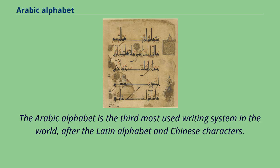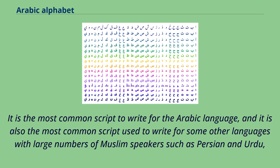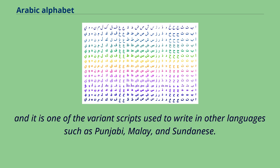The Arabic alphabet is the third most used writing system in the world, after the Latin alphabet and Chinese characters. It is the most common script to write for the Arabic language, and also the most common script used to write for some other languages with large numbers of Muslim speakers, such as Persian and Urdu. It is also one of the variant scripts used to write in other languages such as Punjabi, Malay, and Sundanese.